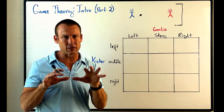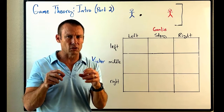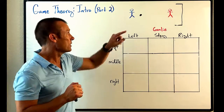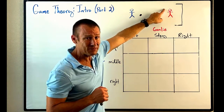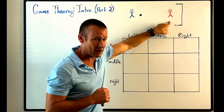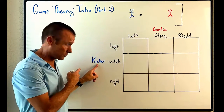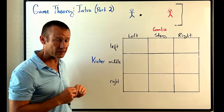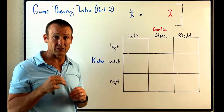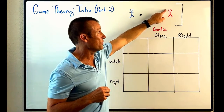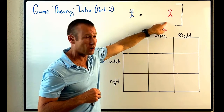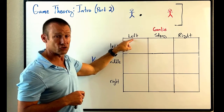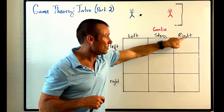Each player has three strategies they can follow. The kicker can kick left, kick middle, or kick right. The goalie also has three strategies: they can jump to their right, stay in the middle, or jump to their left.